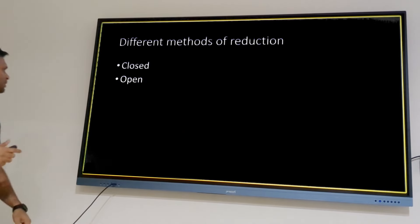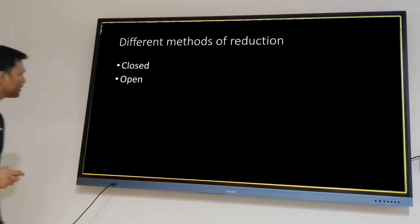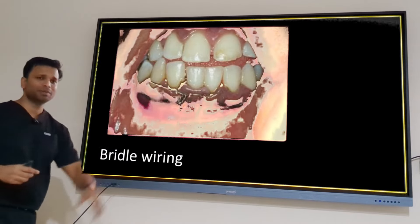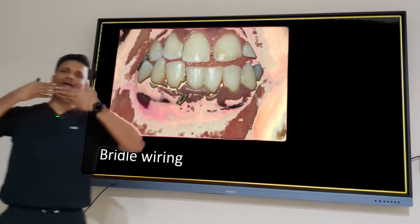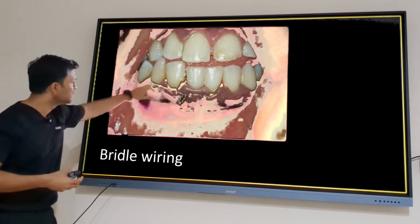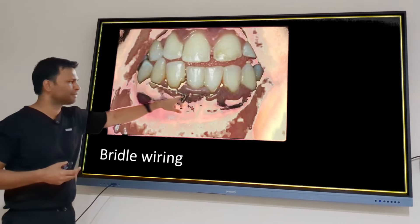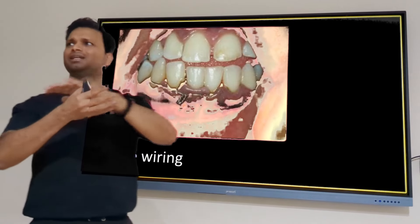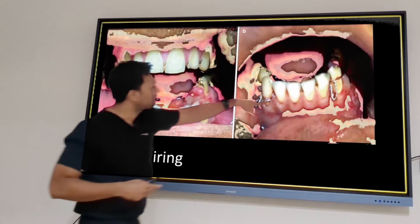For emergency management, eyelet wiring (Bridle wiring) can be done — two teeth on either side of the fracture are wired together, preventing the fracture segment from moving and reducing patient pain. This does not need to be in a perfect position as it is only emergency management. Other emergency methods include four-tailed bandage and Barton's bandage to prevent movement.